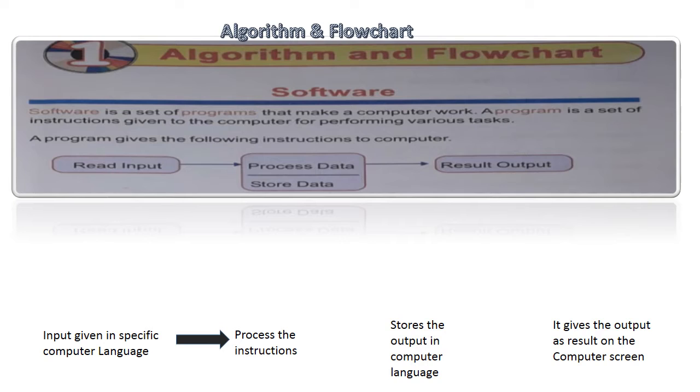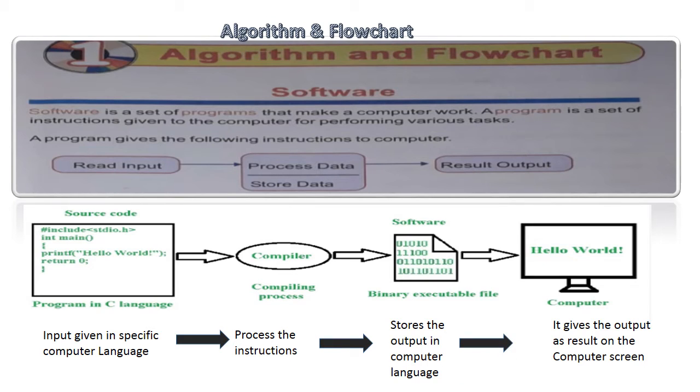A program gives the following instructions to the computer. See the diagram below. It shows how a program gives instructions to the computer. Read input, process data, store data, result output. It gives output as result.